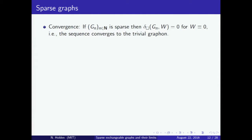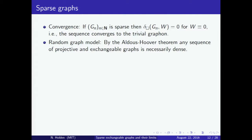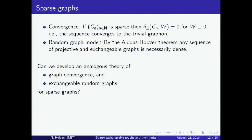What can we say in the setting of sparse graphs? If we have a sequence of sparse graphs, they will always converge to the trivial graphon — the graphon identically equal to zero. We are also interested in generating sparse random graphs that are both projective and exchangeable. But by the Aldous-Hoover theorem, any sequence of projective and exchangeable graphs was generated from a graphon, so it is necessarily dense. The question is: can we develop an analogous theory of graph convergence and exchangeable random graphs in the sparse setting?